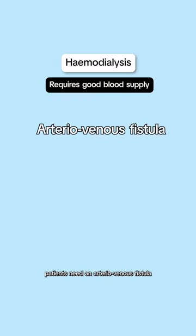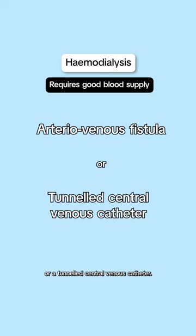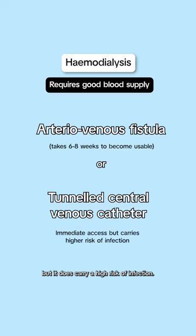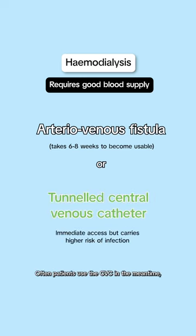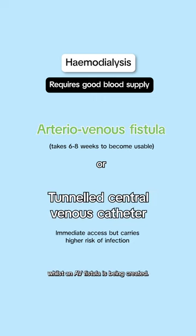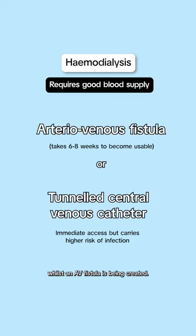For haemodialysis, patients need an arteriovenous fistula or a tunneled central venous catheter. A fistula is preferred, but it takes six to eight weeks to become usable, whereas a CVC gives immediate access but carries a higher risk of infection. Often patients use a CVC in the meantime, whilst an AV fistula is being created.